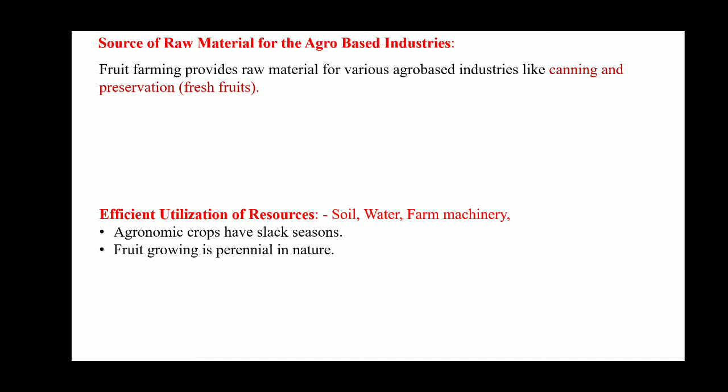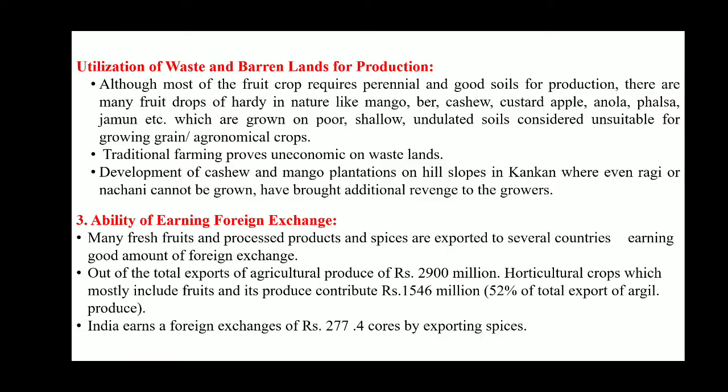Agronomic crops have slack seasons, while horticultural crops do not have any slack seasons because one or another crop may always be available in the field. Fruit growing is perennial in nature. Additionally, utilization of waste and barren land is possible under horticultural crops.